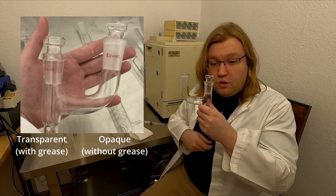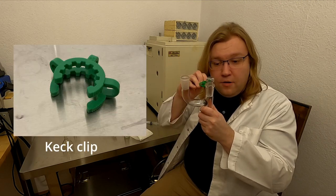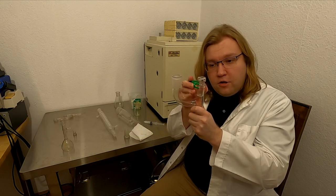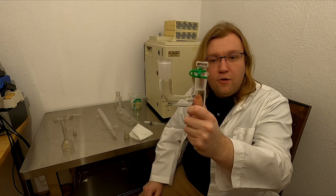You can secure a joint by adding a so called keg clip. A small plastic clip holds the joint together. Slide it sideways onto the joint, till it snaps into place securely.